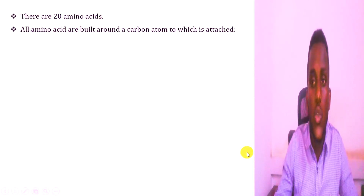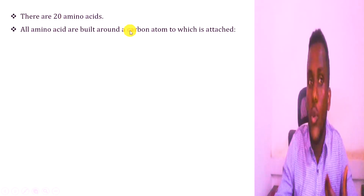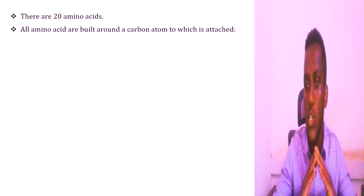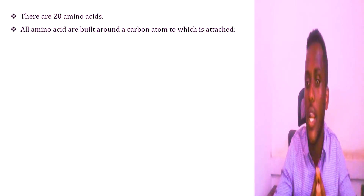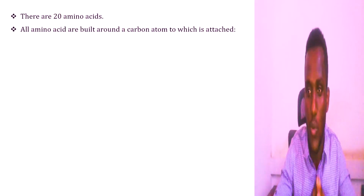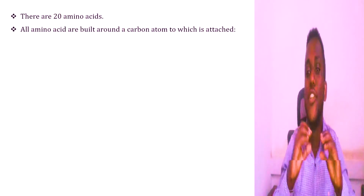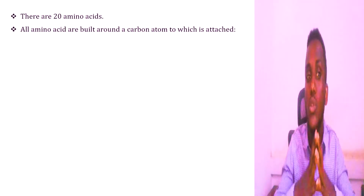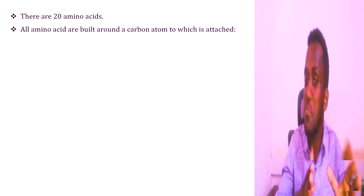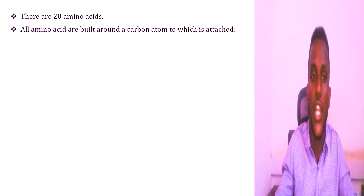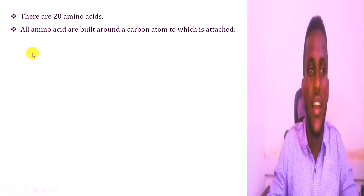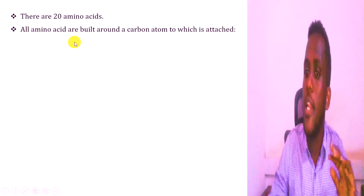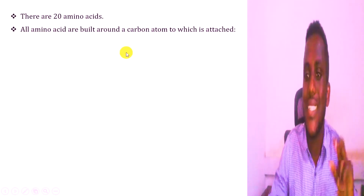Generally, there are 20 amino acids that naturally occur in our body. When the amino acid is essential, it must be obtained from outside the body. When it is non-essential, the body can synthesize it naturally.